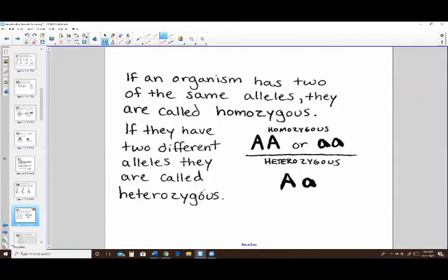All right, if you have two of the same type of gene, so like two big A's or two little a's, that is called homozygous. So the prefix homo means the same. Zygous is related to your genes. All right, if you have two different genes, so one dominant and one recessive, so big A little a, that is called heterozygous. So hetero means different. Zygous related to your genes, so different genes.